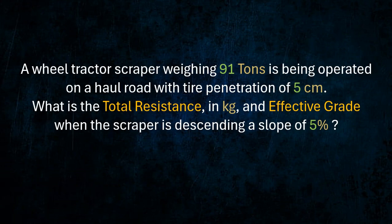A wheel tractor scraper weighing 91 tons is being operated on a haul road. With tire penetration of 5 centimeters, what is the total resistance in kilograms and effective grade when the scraper is descending a slope of 5%?